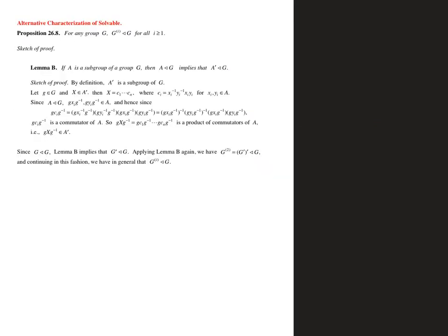We want to use these commutator subgroups to figure out how to show that something isn't solvable — that's going to be the crowning piece of theory we need, and then all we need to do is find a polynomial. The proposition that's going to be really useful is that the i-th commutator subgroup of a group G is a normal subgroup of G for every i. There's a proof over here that uses a lemma saying that the commutator subgroups of any subgroup of G are normal in G.